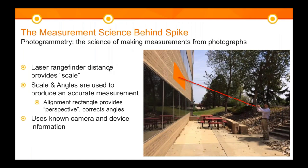There is actually a measurement science behind Spike. Some of you might already be familiar with photogrammetry. The way it works with Spike involves two pieces of information: Spike notes how far back I am, which provides the scale, and then there's the angle component — the alignment rectangle provides the perspective and corrects for angles. Spike also knows camera and device information, and that's how it works.